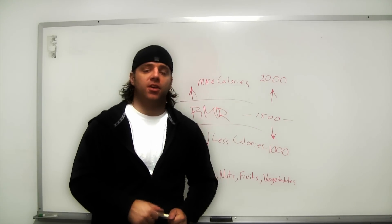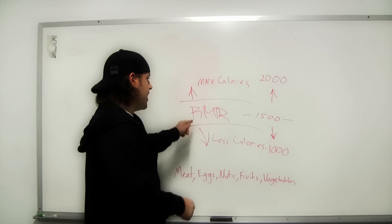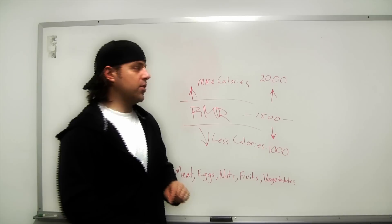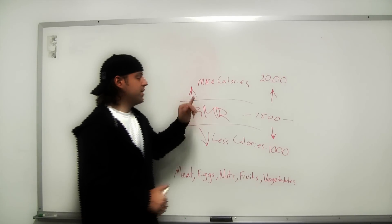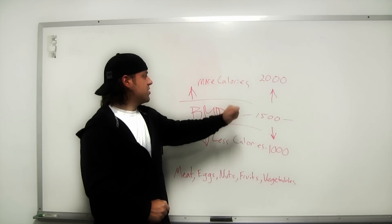1500 calories is what we're going to use for example today. So if you can maintain your body weight at 1500 calories, that is your resting metabolic rate, otherwise known as basal metabolic rate - BMR, RMR. So you know when you see those things.